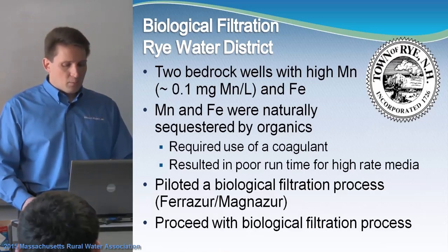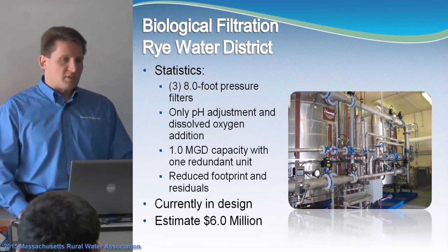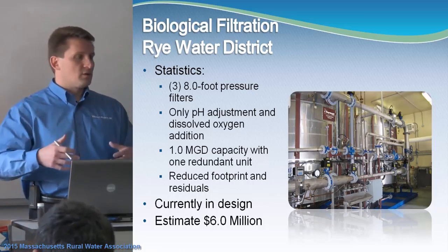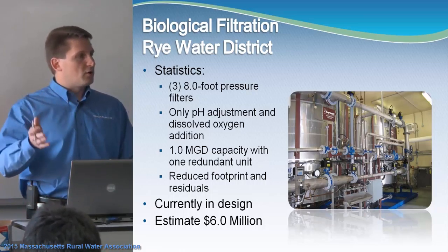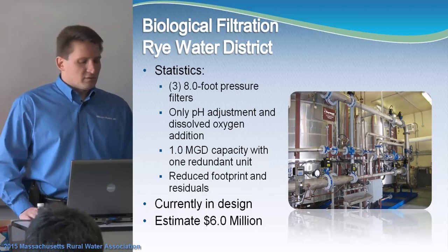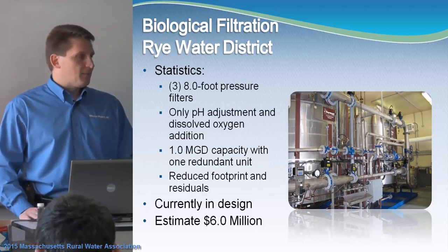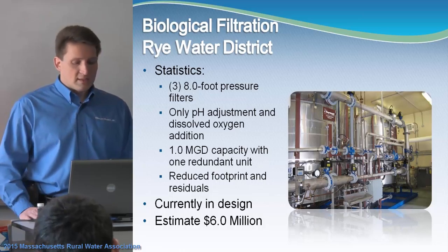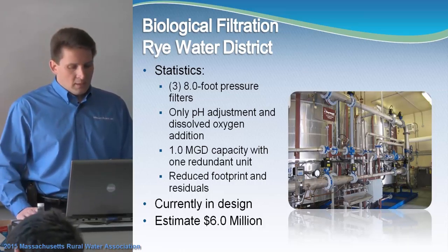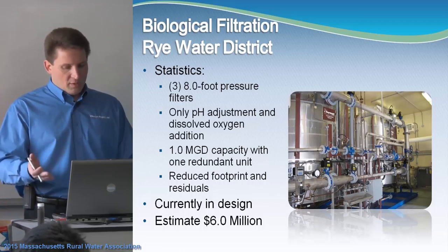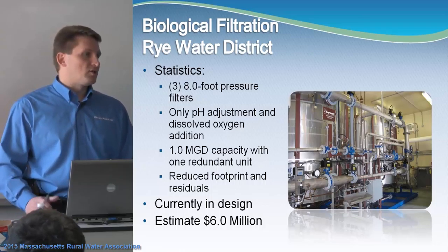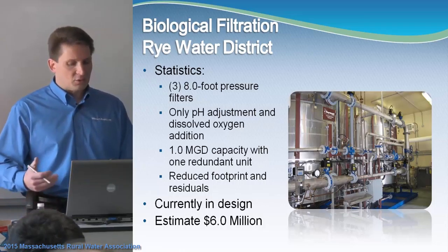At that point they decided to look at the biological process — referred to as the ferrogure and magnezure process. From what I understand, it's a media that only needs a stable pH and oxygen to allow naturally occurring bacteria from the wells — which eat iron and manganese and form slime layers — to remove the iron and manganese from the water. Following successful piloting, they decided to proceed with that process. The design would be three 8-foot diameter pressure filters needing only pH adjustment and dissolved oxygen, with a capacity of 1.0 MGD and one redundant unit. The process backwashes less frequently, reducing residuals. The facility is currently in design at an estimated cost of about $6 million.